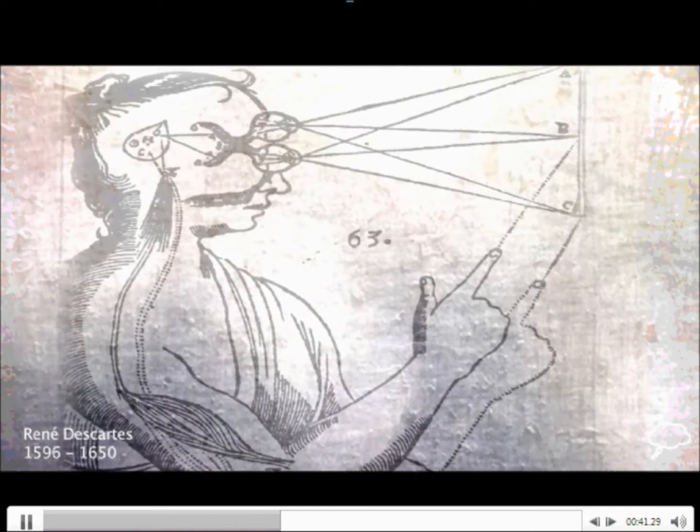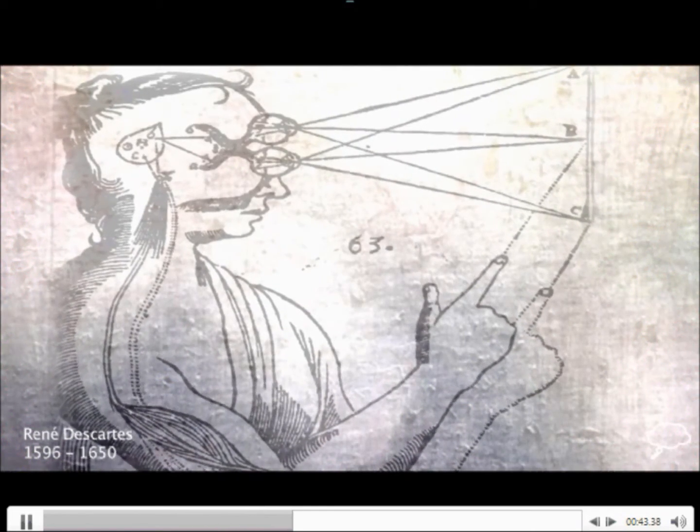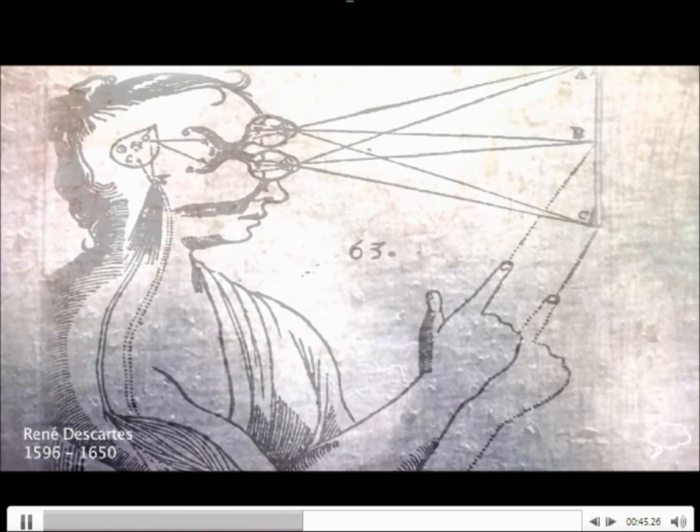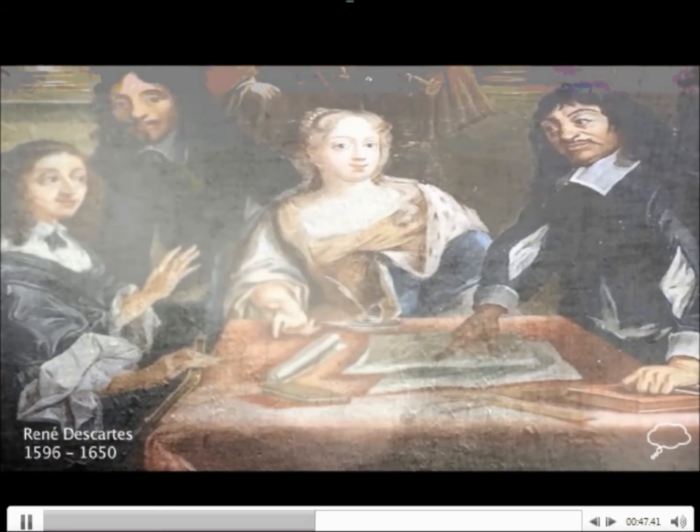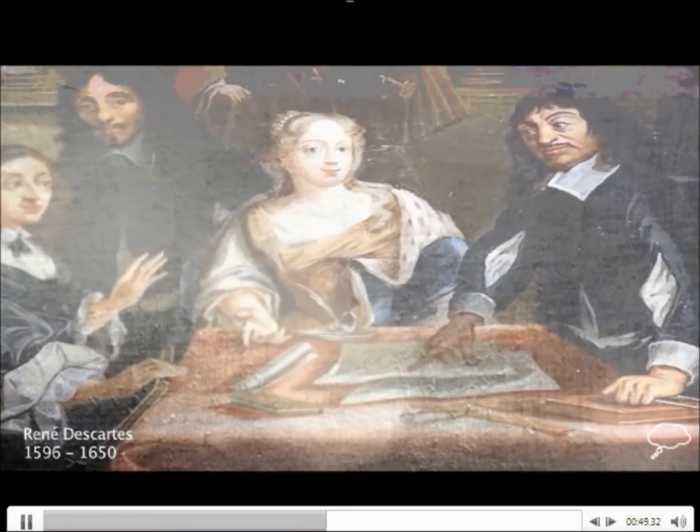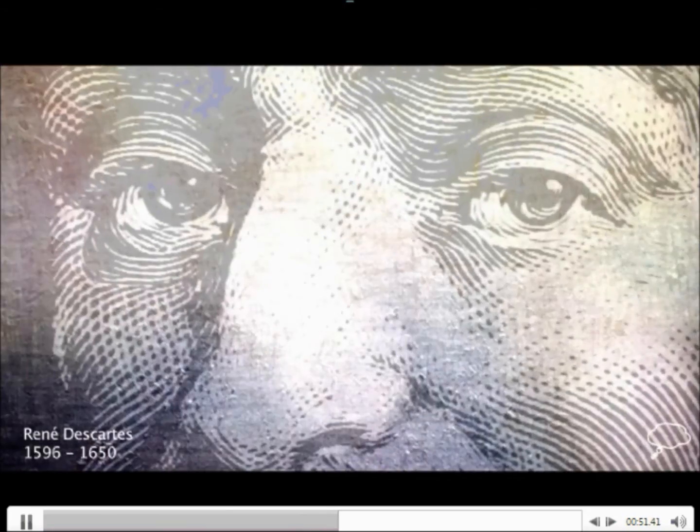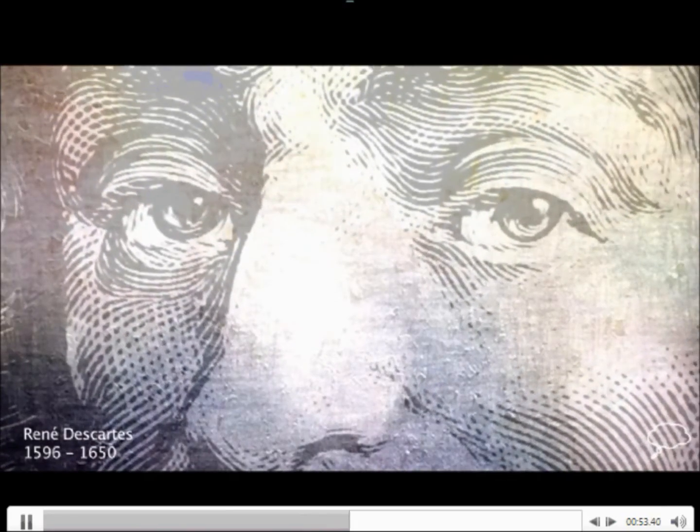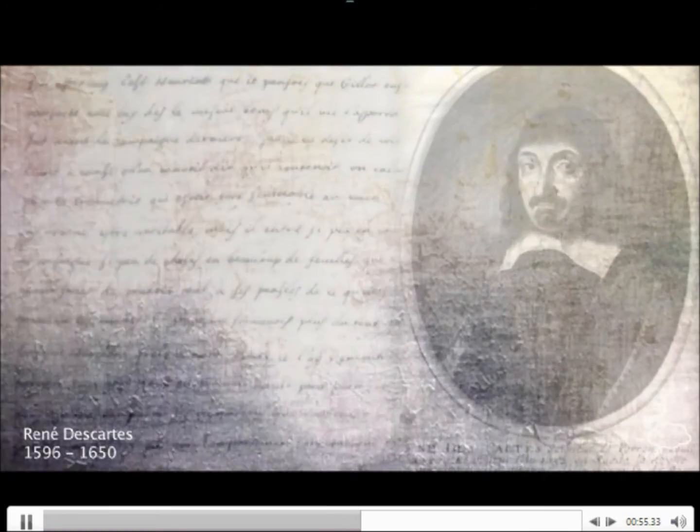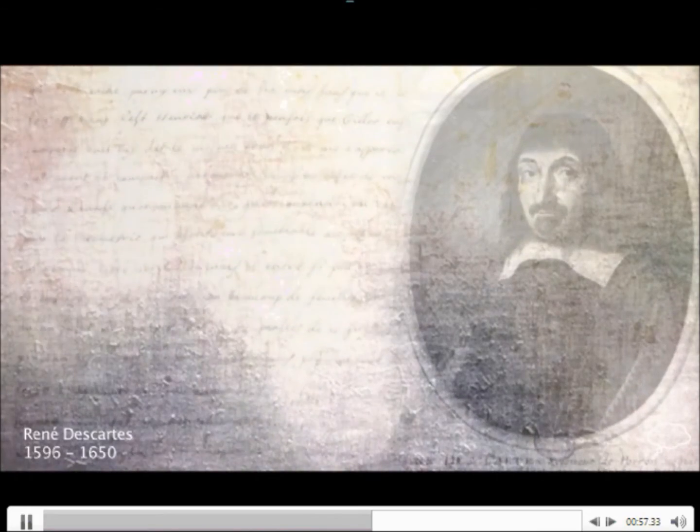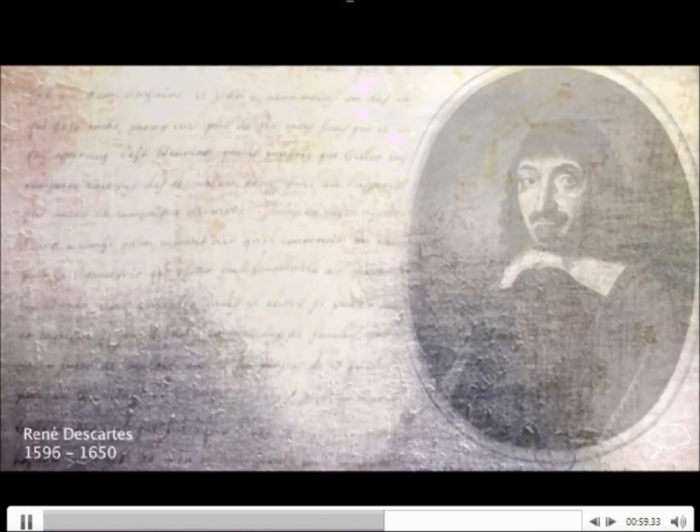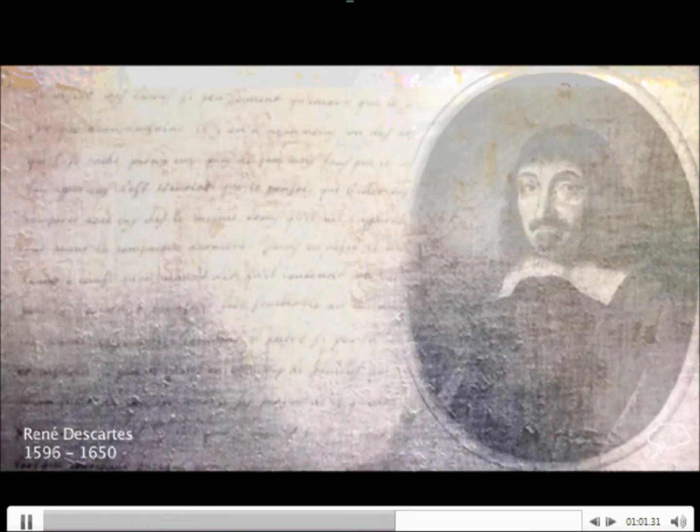He then enlisted in the army and during his spare time he studied mathematics. In 1619 he experienced a series of powerful dreams which influenced him greatly in his pursuit of science and knowledge and he acknowledged this as the focal point of his life. He spent time in various parts of Europe before he settled in the Dutch Republic. He maintained his studies and lived in various places throughout the Republic. During this time he began his writing career and he began to publish his new works that would revolutionize mathematics and philosophy. These works included The World,